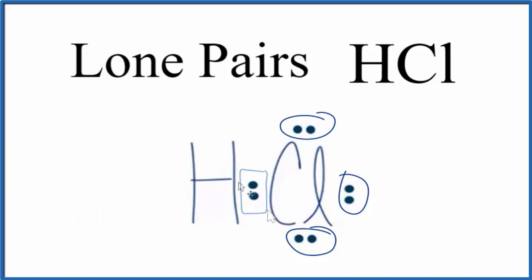But these are the lone pairs for HCl. Sometimes we'll represent the bonded pair as a line to show that the electrons are shared. So the bonded pair represents two electrons shared between the hydrogen and the chlorine in a chemical bond.